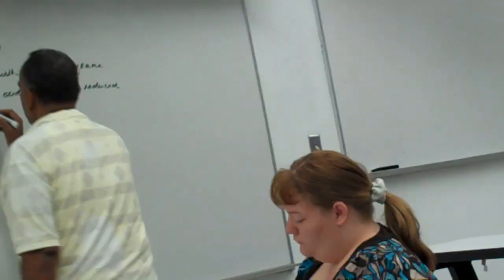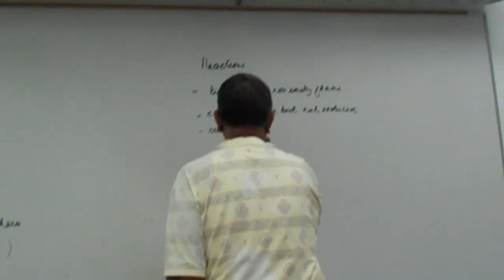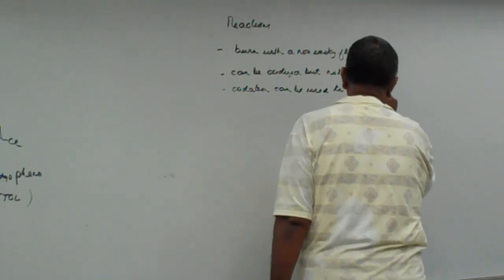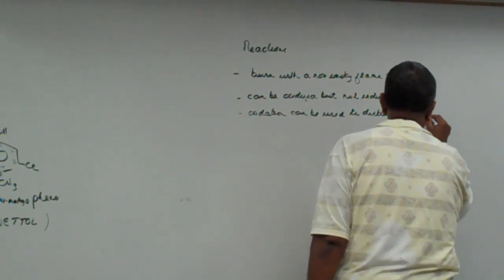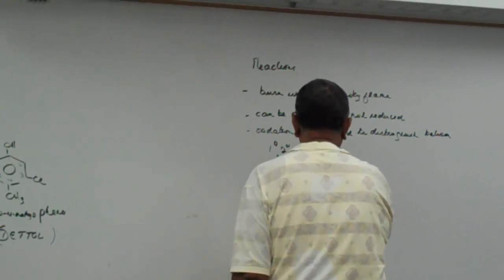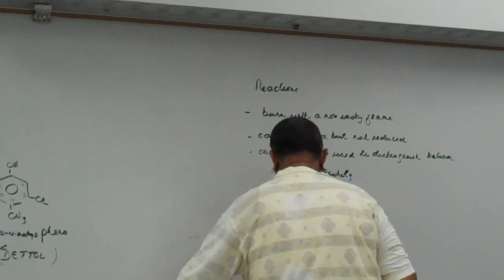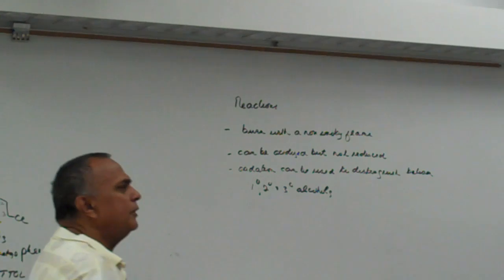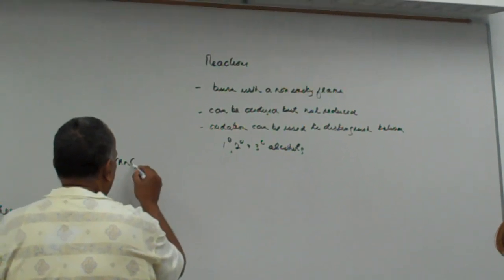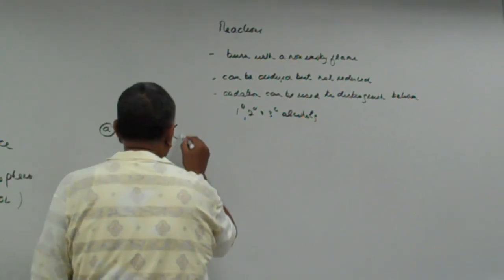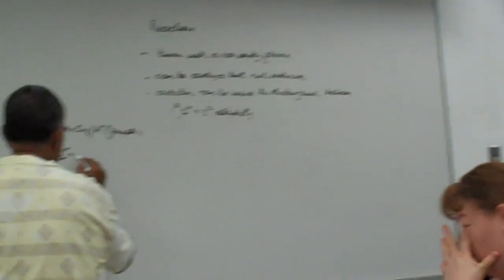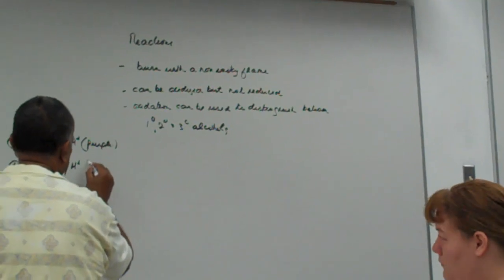Now, oxidation can be used to distinguish between primary, secondary, and tertiary alcohols. There are two reagents we normally use. One of them is acidified potassium permanganate, which is a purple-colored liquid. The other one is acidified potassium dichromate, which is orange.